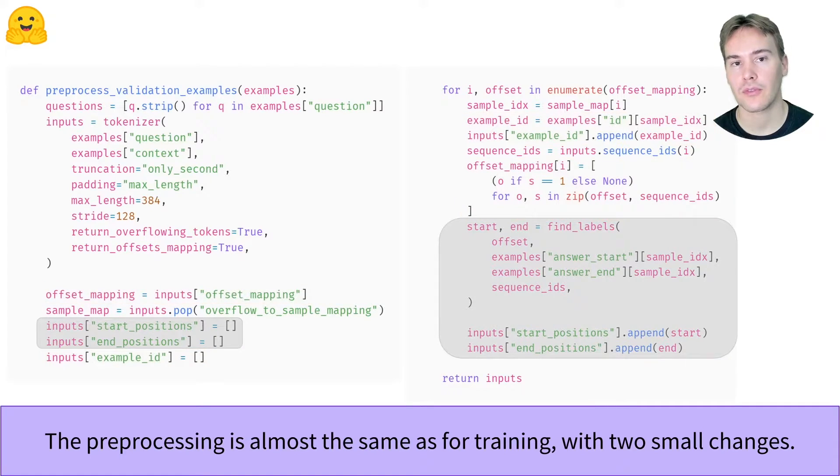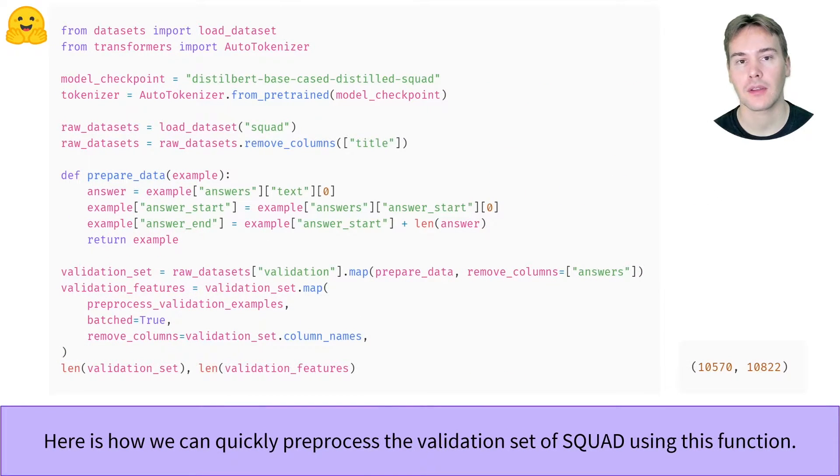If you don't want to compute the validation loss, you won't need to include all the special code that we use to create the labels. With this done, we can apply that preprocessing function using the map method. We take the SQUAD dataset like in the preprocessing for question answering video. Once this is done, the next step is to create our model.